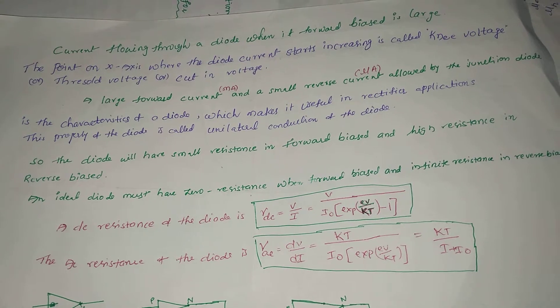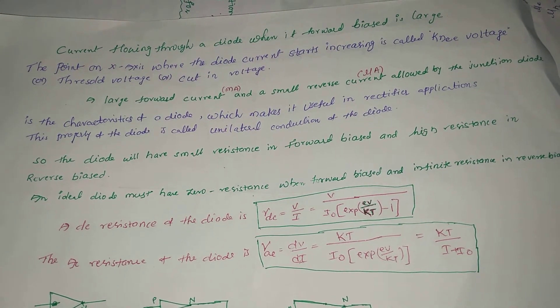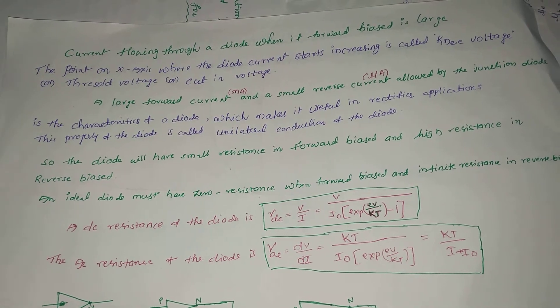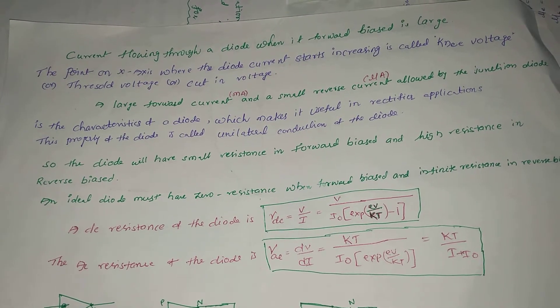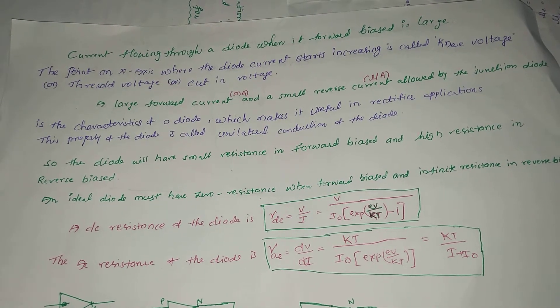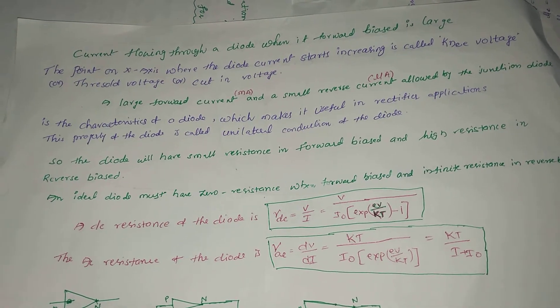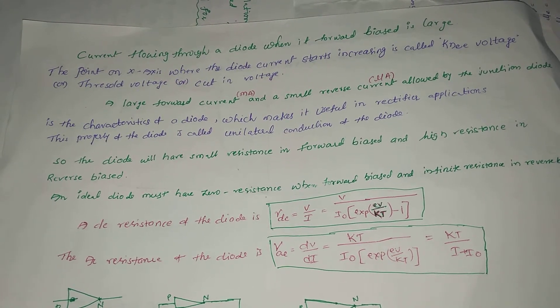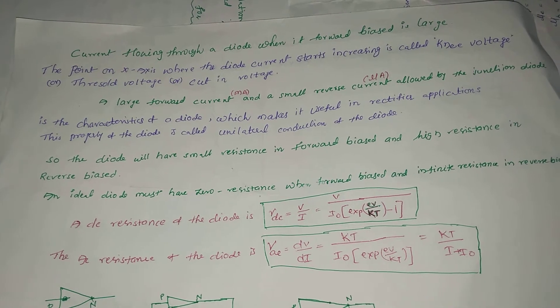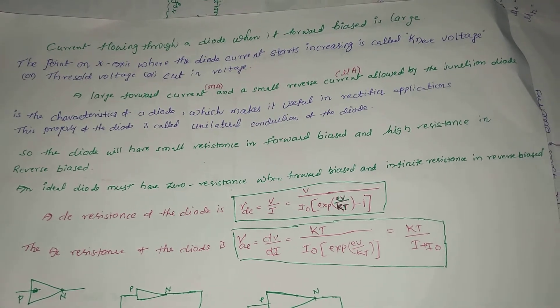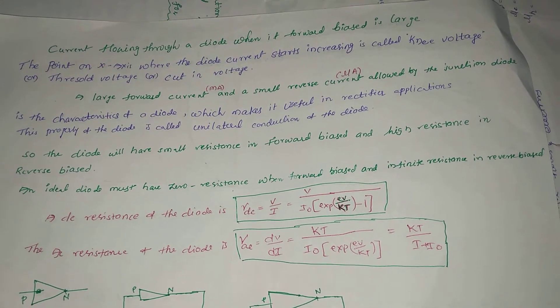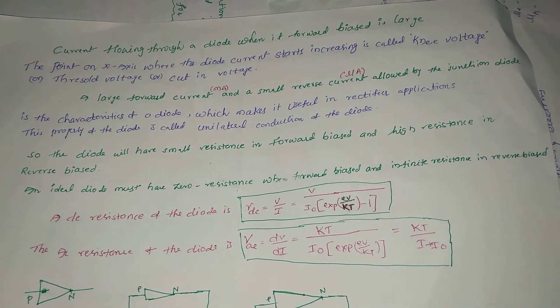The current flowing through a diode when it's forward biased is large. The point on X-axis where the diode current starts increasing is called knee voltage or threshold voltage or cut-in voltage. A large forward current in milliamperes and a small reverse current in microamperes allowed by the junction diode is the characteristic of a diode which makes it useful in rectifier applications.